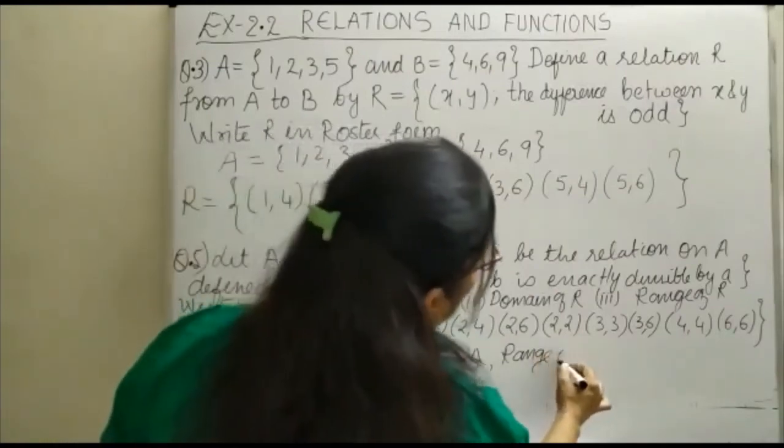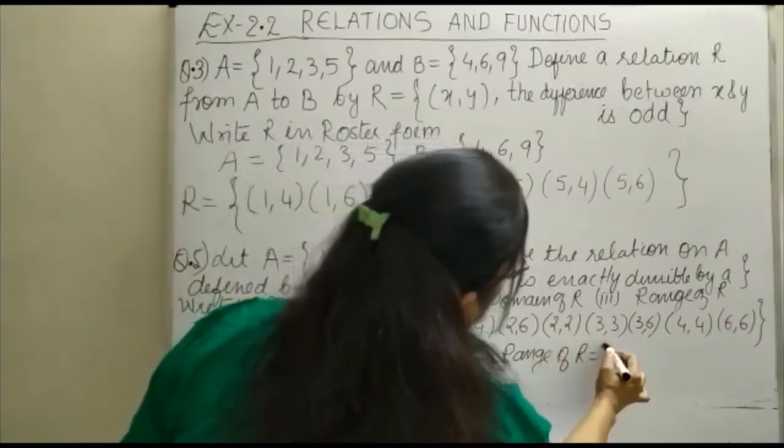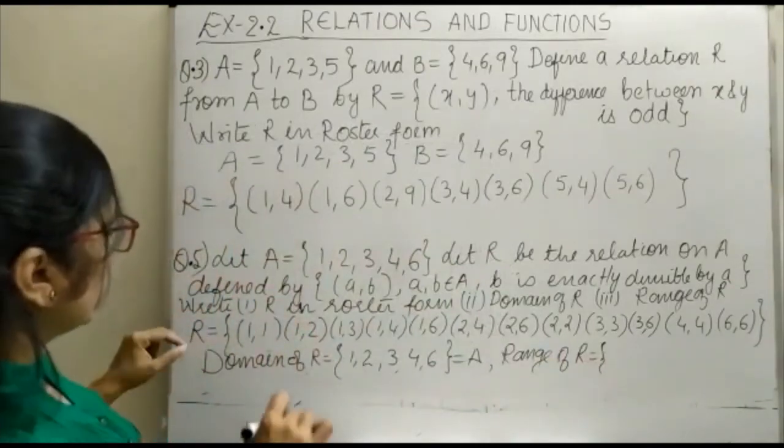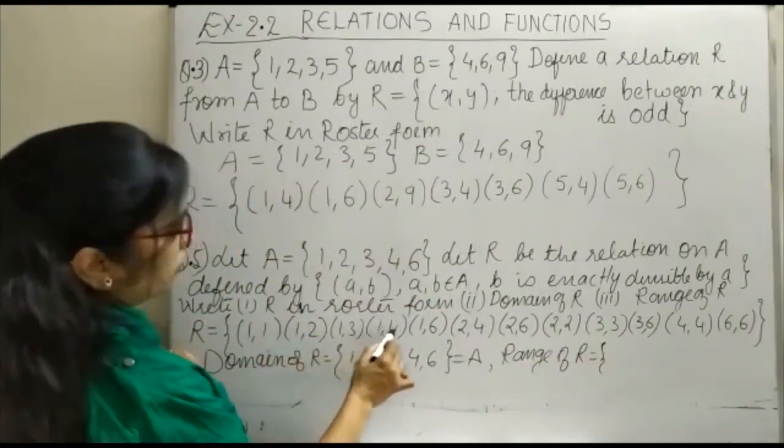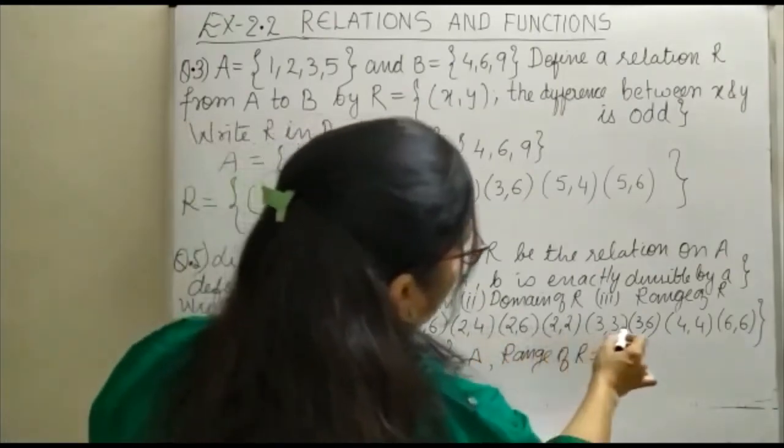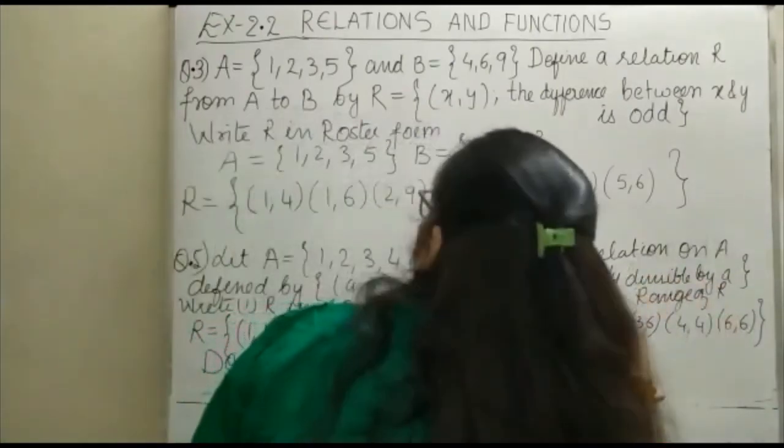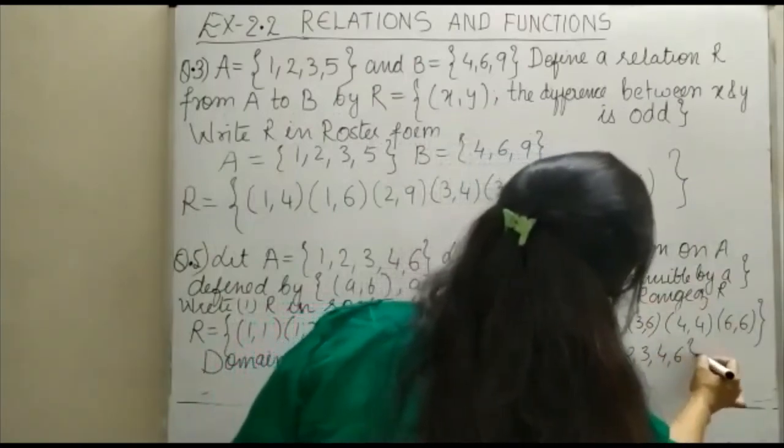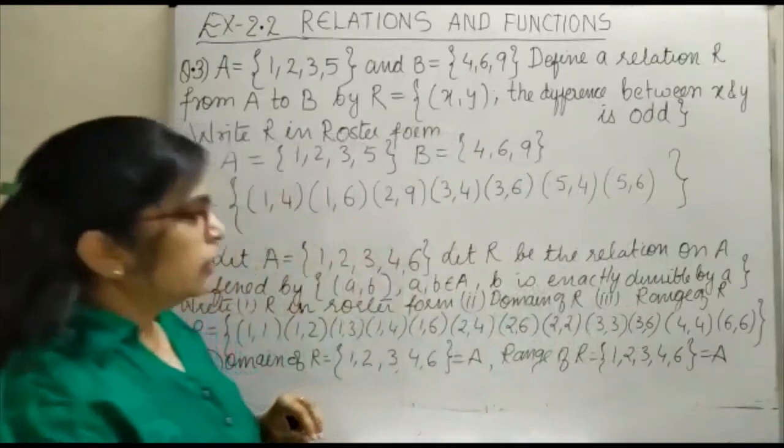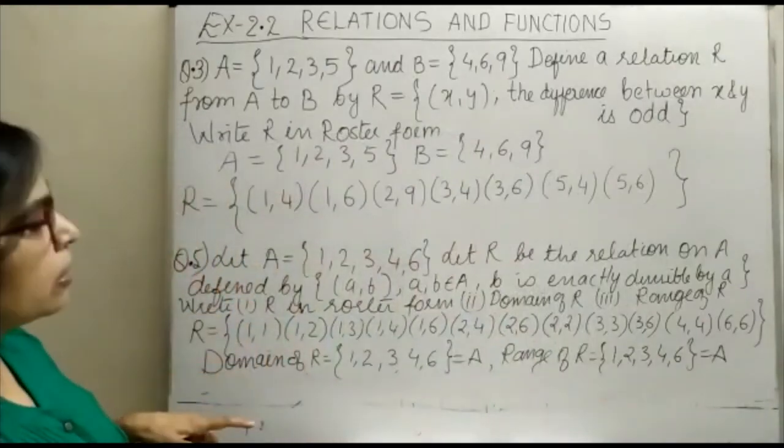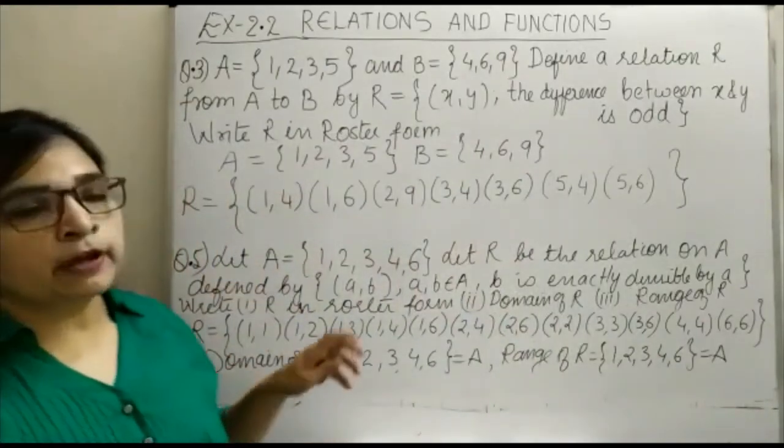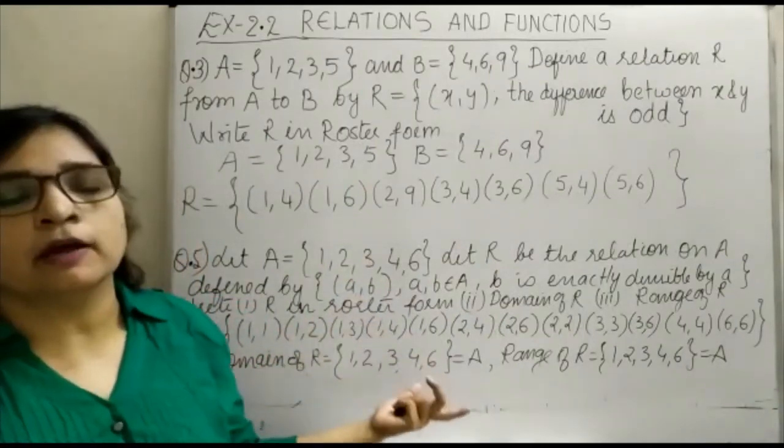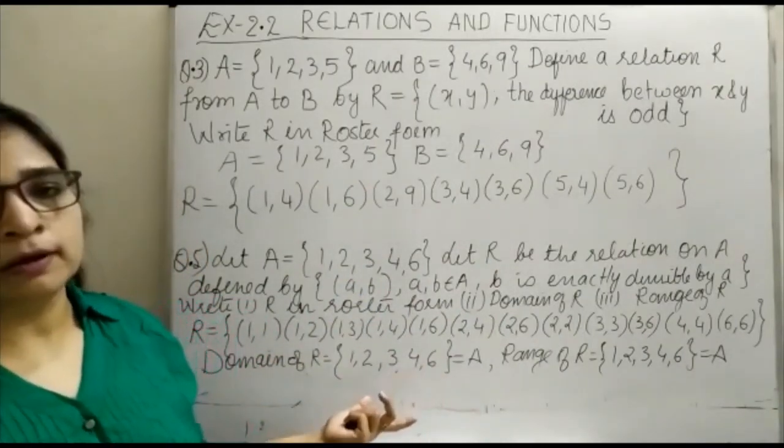Similarly, when we are here with range of R, range is the collection of second elements of the ordered pairs of the relation. So you can see: 1, 2, 3, 4, 6 again—all elements are there, so you will get {1, 2, 3, 4, 6}, and this is again equal to A. So in this way we have worked out the ordered pairs, written them in roster form, and worked out the domain of R and the range of R. Thank you.